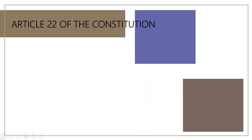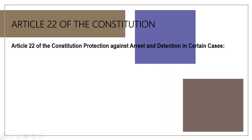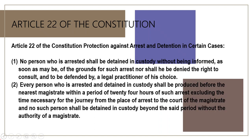Article 22 of the Constitution provides protection against arrest and detention in certain cases. Clause 1: No person who is arrested shall be detained in custody without being informed, as soon as may be, of the grounds for such arrest, nor shall he be denied the right to consult and to be defended by a legal practitioner of his choice. Clause 2: Every person who is arrested and detained in custody shall be produced before the nearest magistrate within 24 hours of such arrest, excluding the time necessary for the journey from the place of arrest to the court of the magistrate, and no such person shall be detained in custody beyond that period without the authority of a magistrate.